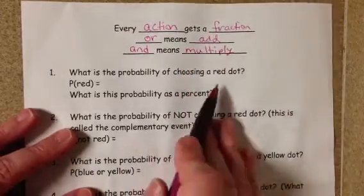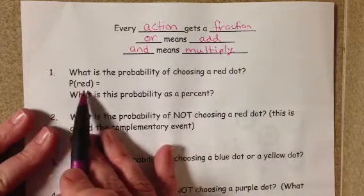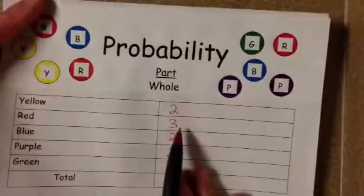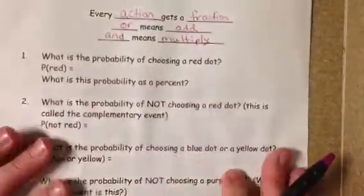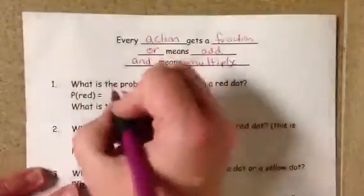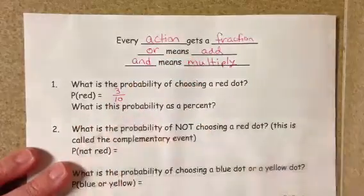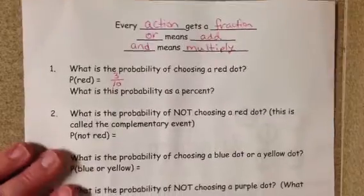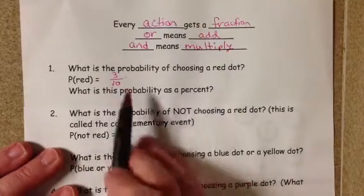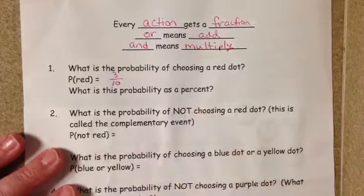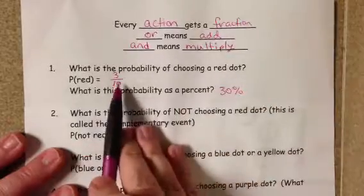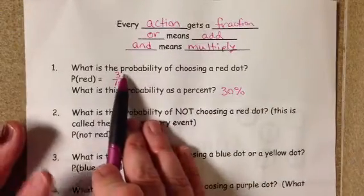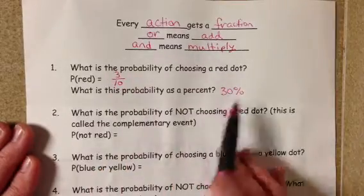We want to know: what is the probability of choosing a red dot? That's written as the probability of red. We determined that there are three red dots out of a total of ten. So we set up that fraction as part to whole: three out of ten. That's our probability of choosing a red dot. Then it wants us to convert this to a percent — three-tenths as a percent is 30%.